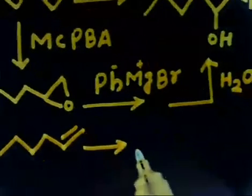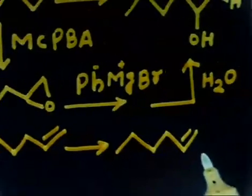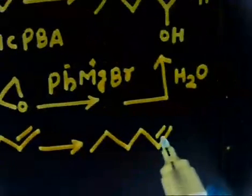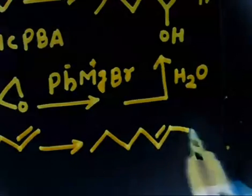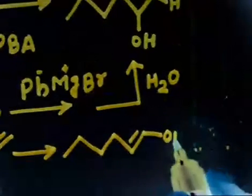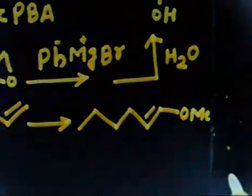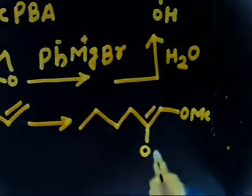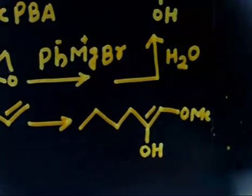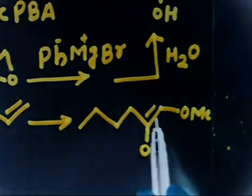The target molecule has at position number one a methoxy group (OCH₃) and at position number two an OH group. The double bond is no longer present, so let me remove the double bond.